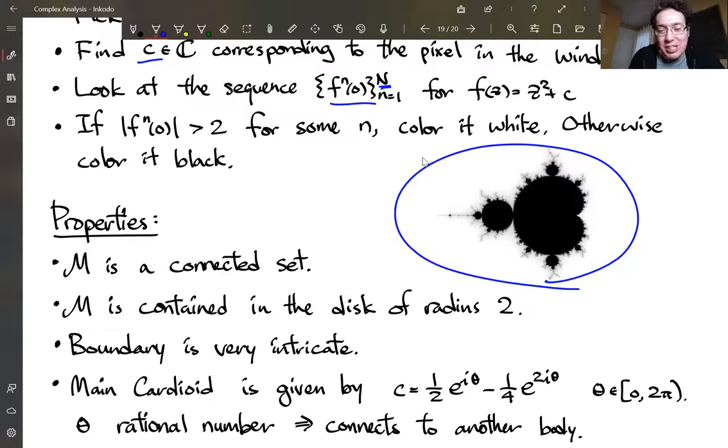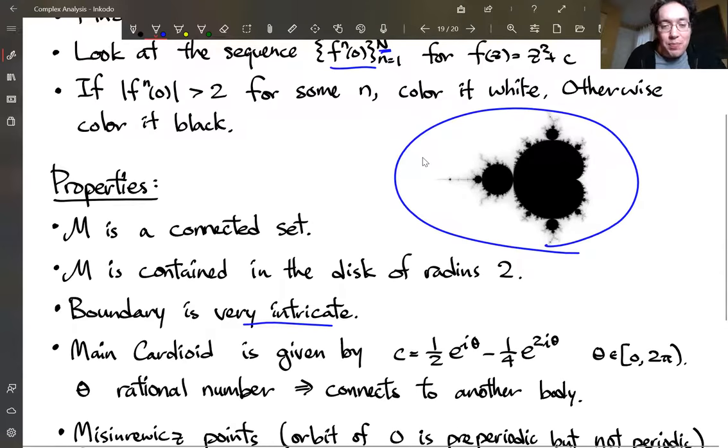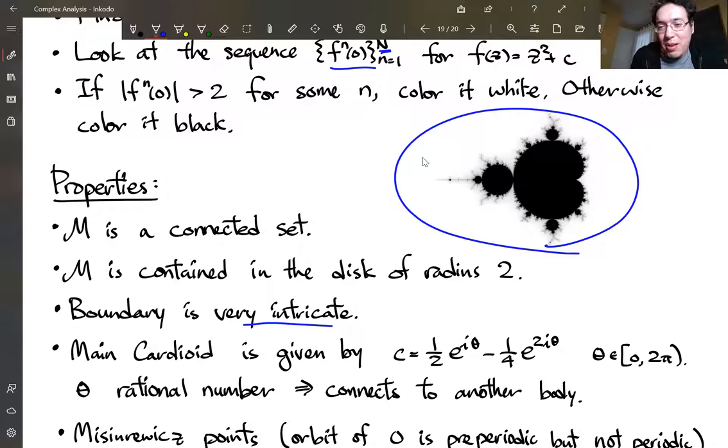Mandelbrot set is contained in the disk of radius two. Boundary is very intricate. It's an understatement. We'll see a video in a bit where we zoom into part of the Mandelbrot set. And it's very rich. There's some parts of the Mandelbrot that you can describe. So this is a perfect circle right there. And this bit right here is called the main cardioid. It looks like a heart that's tipped over.